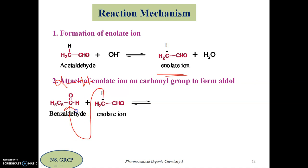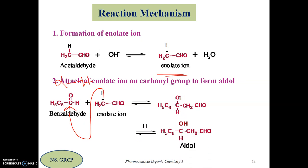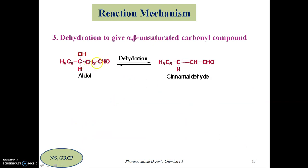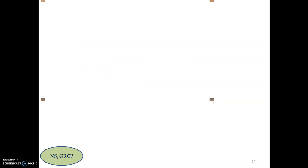Once the enolate ion is generated from acetaldehyde, it acts as a nucleophile and attacks the carbonyl carbon of benzaldehyde. This gives the corresponding anion, which takes up protons from the water formed as byproduct to give the corresponding aldol. Dehydration then removes H plus from the second carbon and OH minus from the third carbon as water, giving cinnamaldehyde. Even compounds without alpha hydrogen can undergo crossed aldol condensation when combined with a compound that has alpha hydrogen.